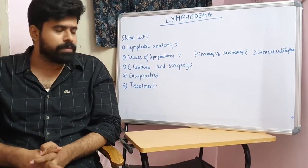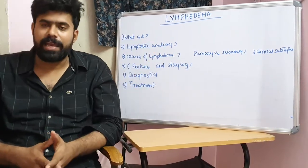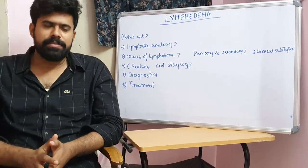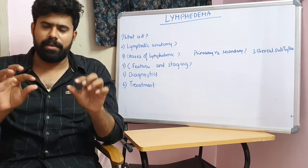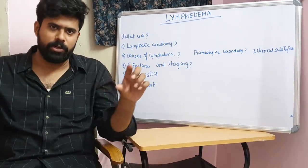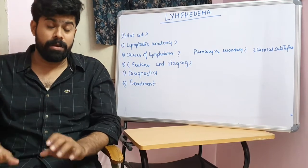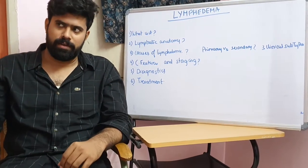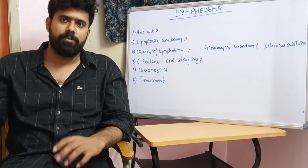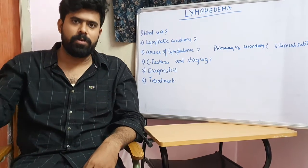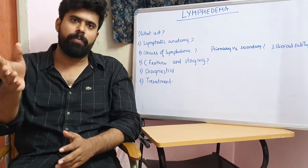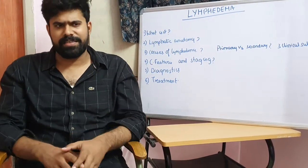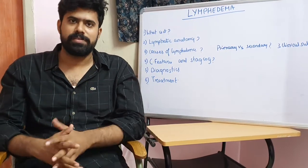Before discussing lymphedema, we will review lymphatic anatomy. Just like vascular anatomy, the lymphatics have lymphatic capillaries. These capillaries have a single layer of endothelial cells, are blind tubes, and have no basal membrane or a widely fenestrated basal membrane. They absorb all interstitial fluids and proteins through wide endothelial gap junctions, and open into micro-lymphatic pre-collector vessels, which have endothelial cells and few smooth muscle cells.